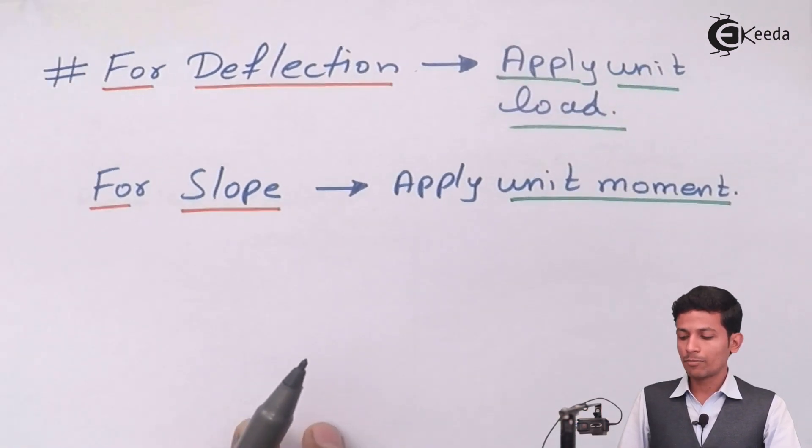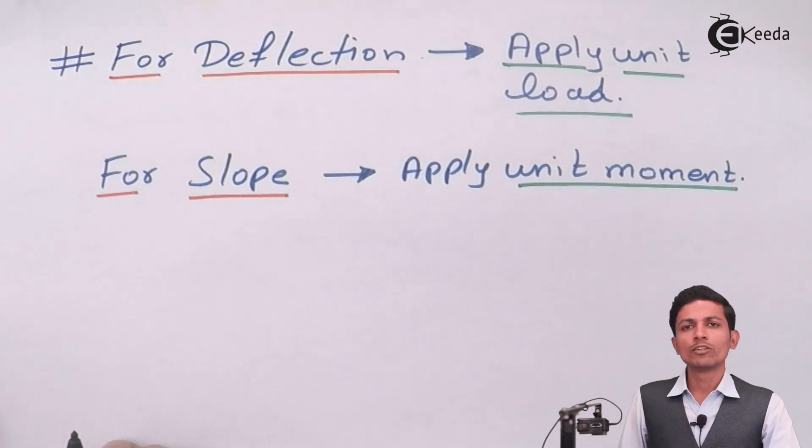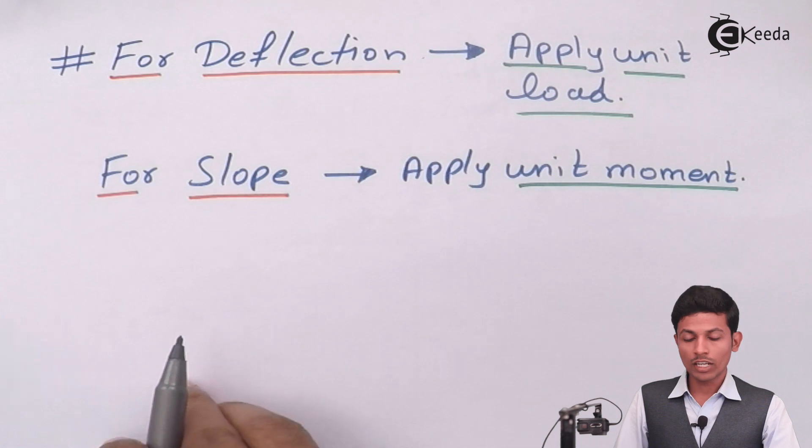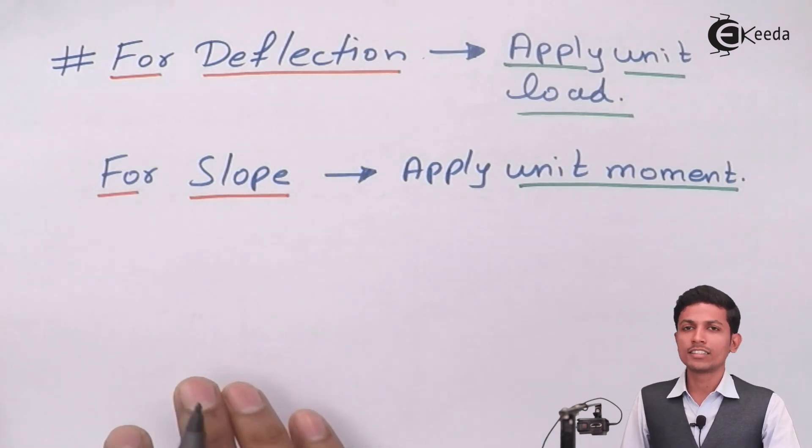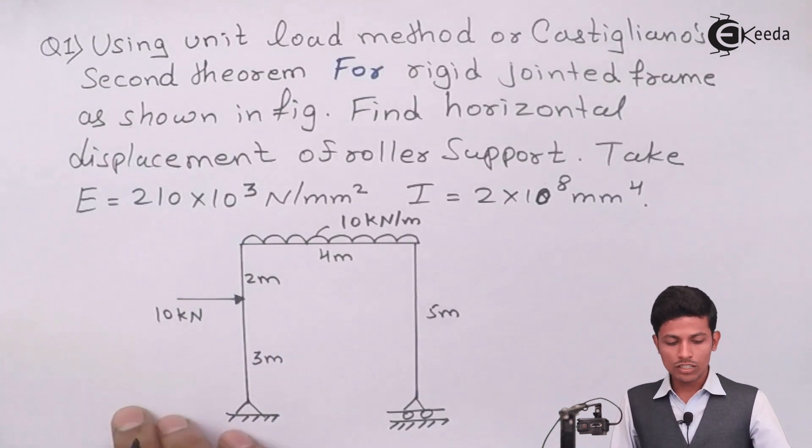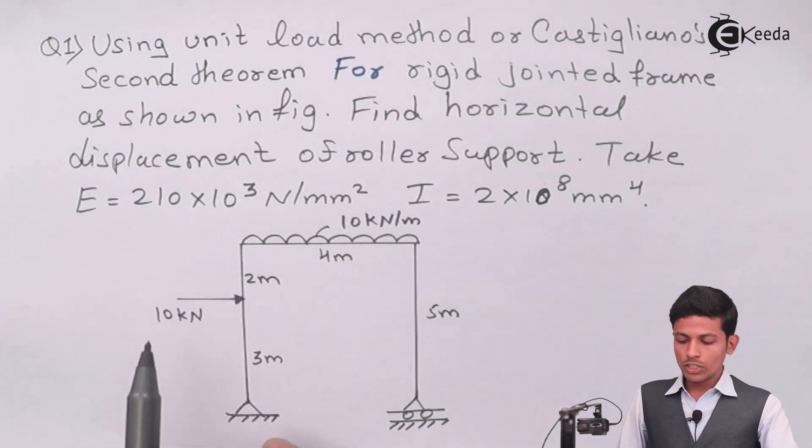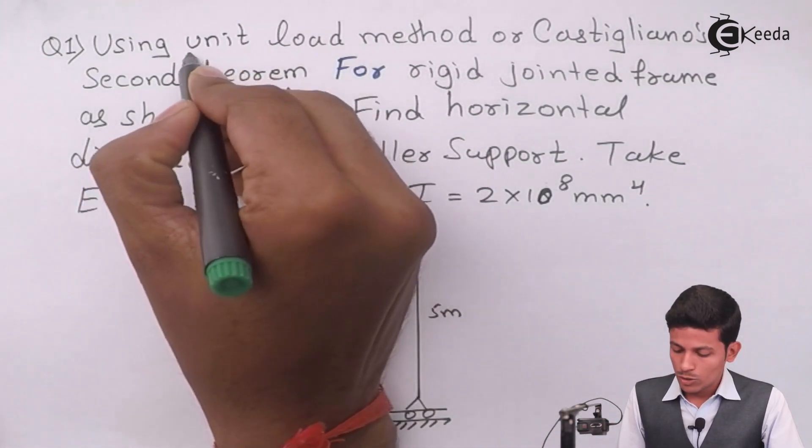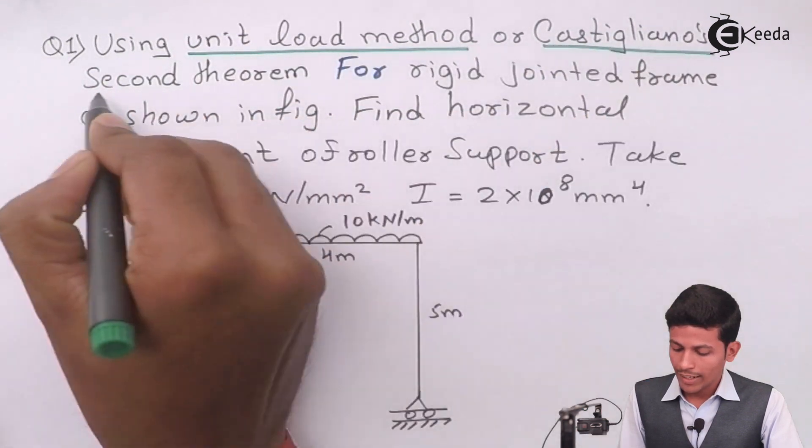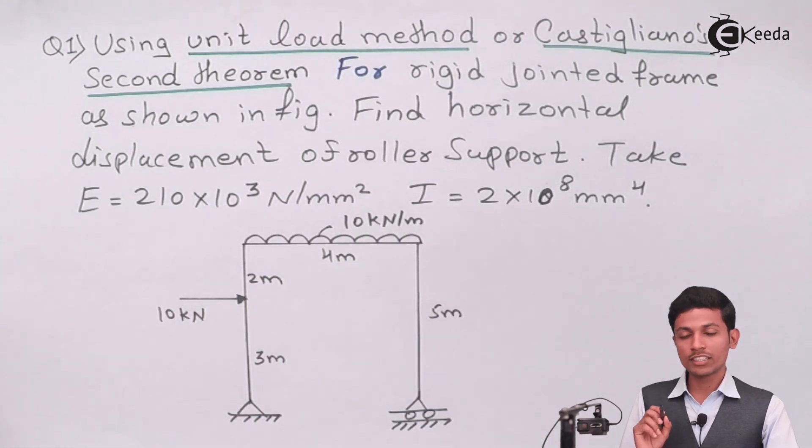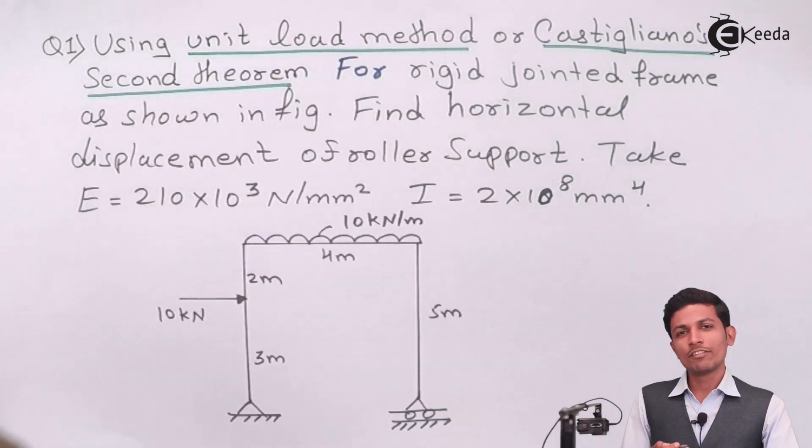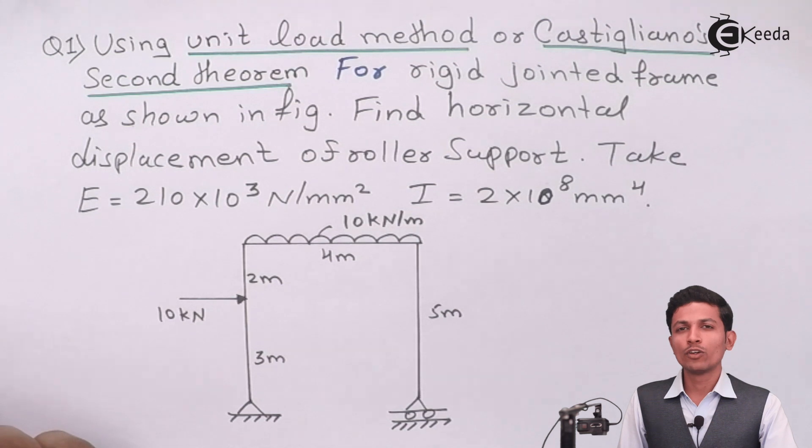Now, let's see the problem. Let's see problem number one in detail so that we understand carefully. Please listen the question first very carefully and understand how to draw the diagram. This is your question number one. Using unit load method or Castiglano's second theorem. As the name indicates unit load, that's why we are applying 1 kN or 1 kN meter.